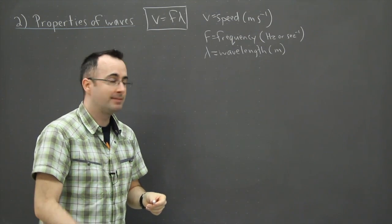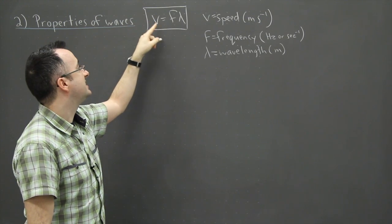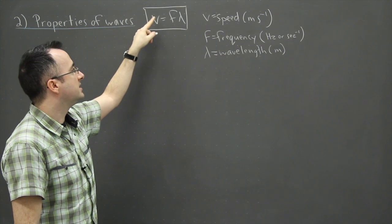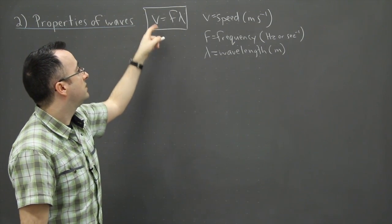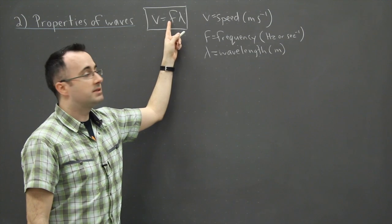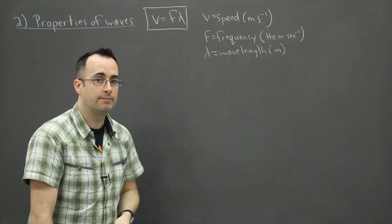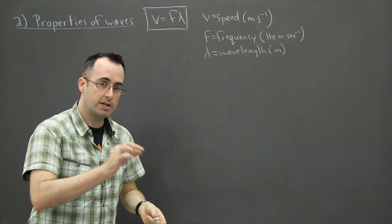If we're looking at light, the speed becomes C, at least if we're in a vacuum, so we could make that C which is 3 times 10 to the 8 meters per second. Then the frequency tells you the wavelength and vice versa. With light, the color tells you the wavelength.